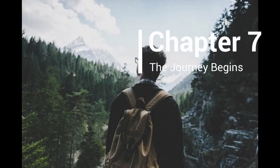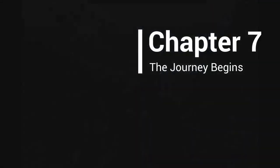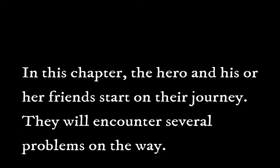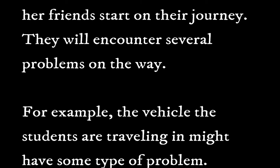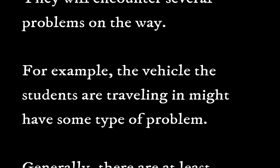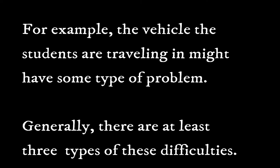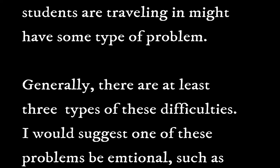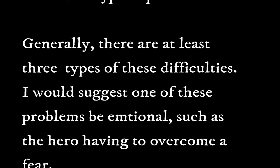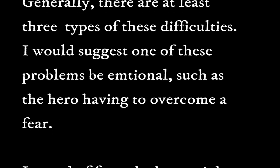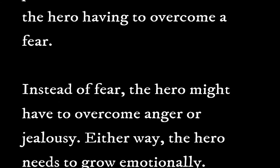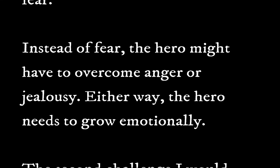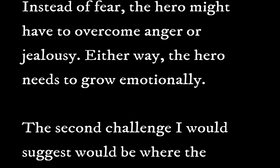Chapter 7: The Journey Begins. In this chapter, the hero and his or her friends start on their journey. They will encounter several problems on the way. For example, the vehicle the students are traveling in might have some type of problem. Generally, there are at least three types of difficulties. I would suggest one of these problems be emotional, such as a hero having to overcome a fear. Instead of fear, the hero might have to overcome anger or jealousy. Either way, the hero needs to grow emotionally.